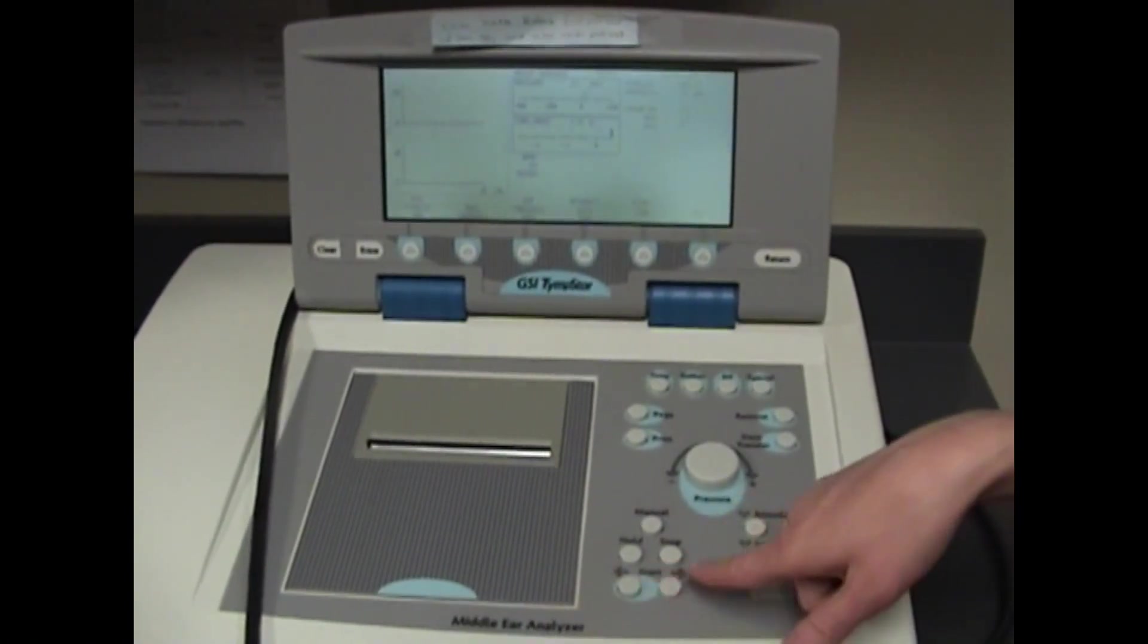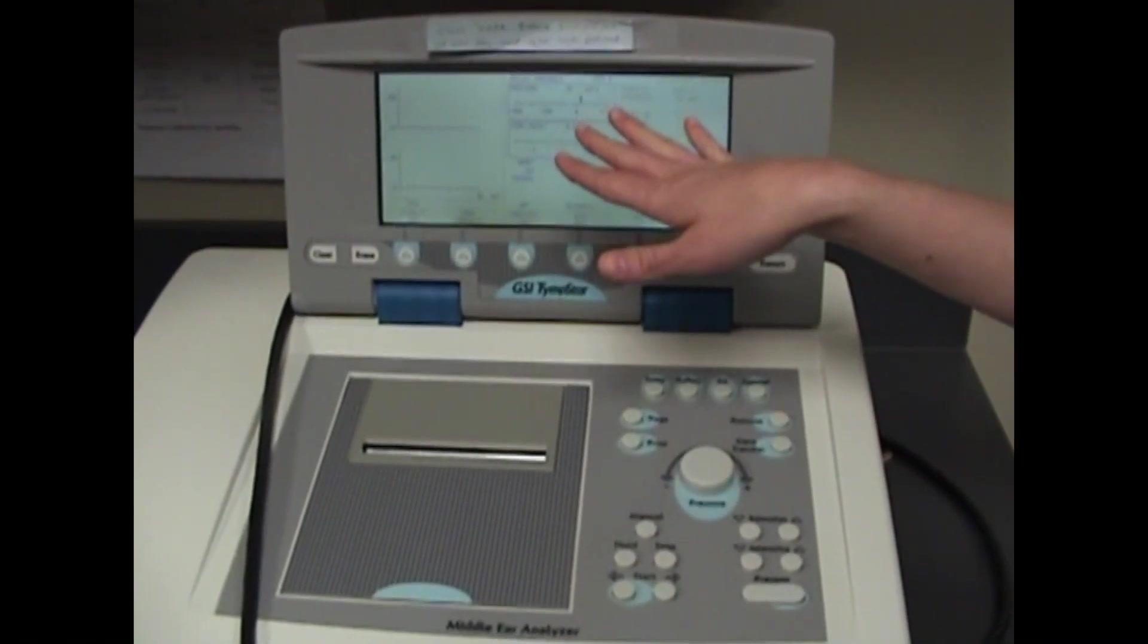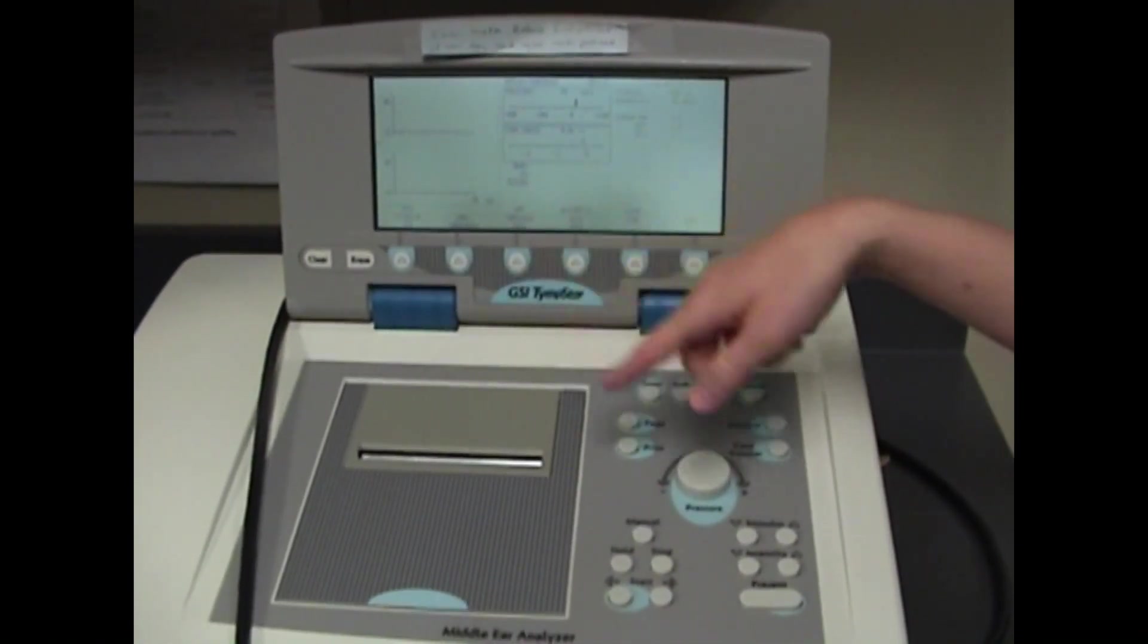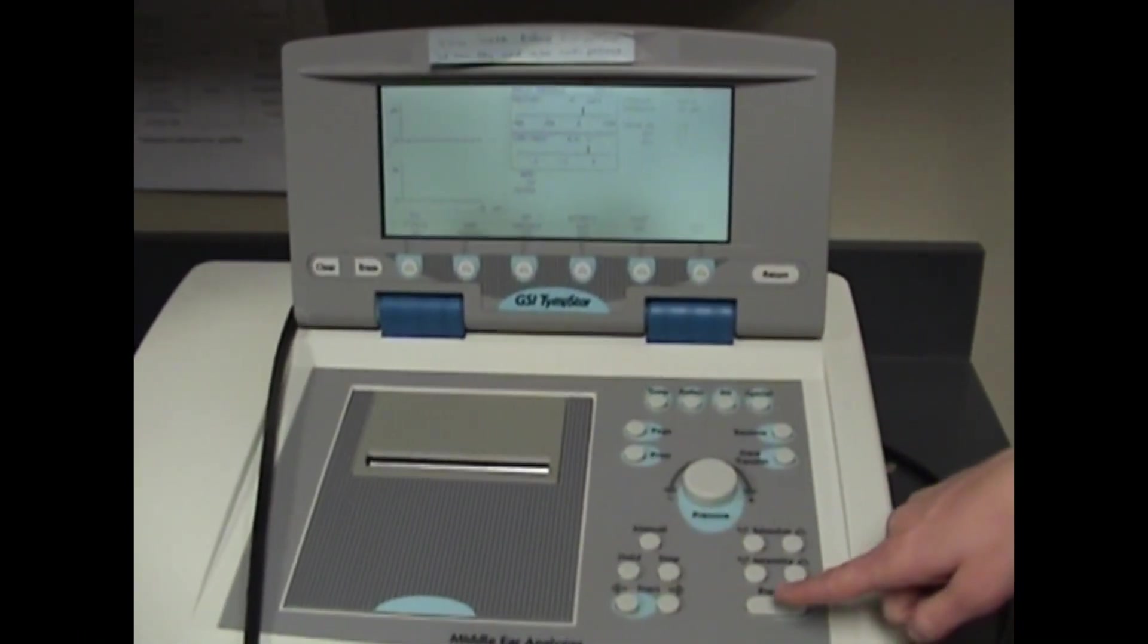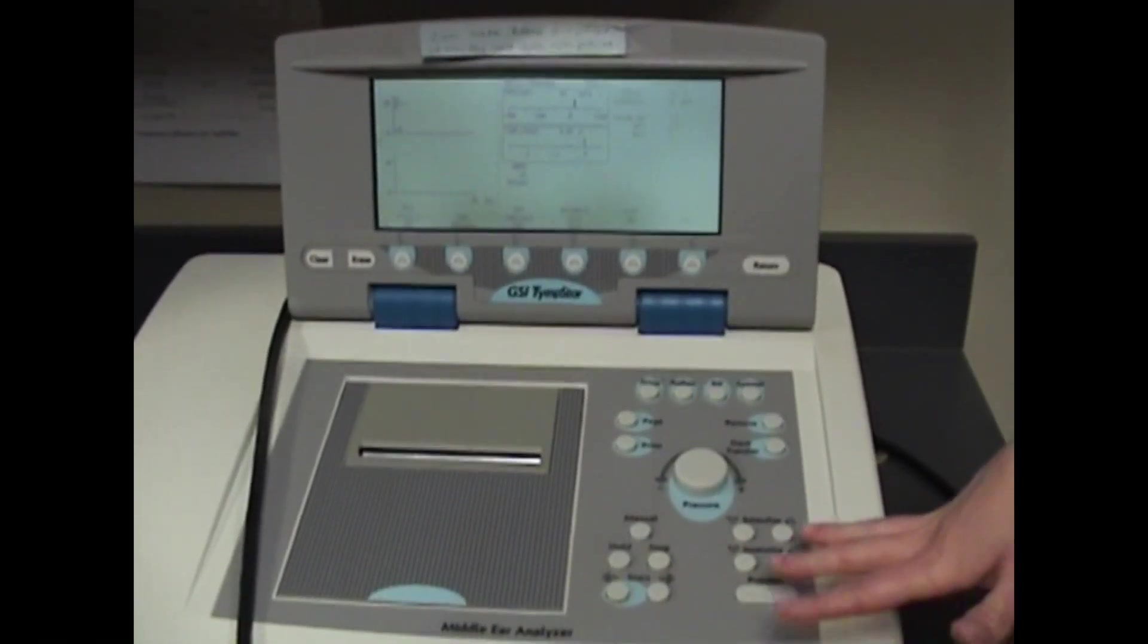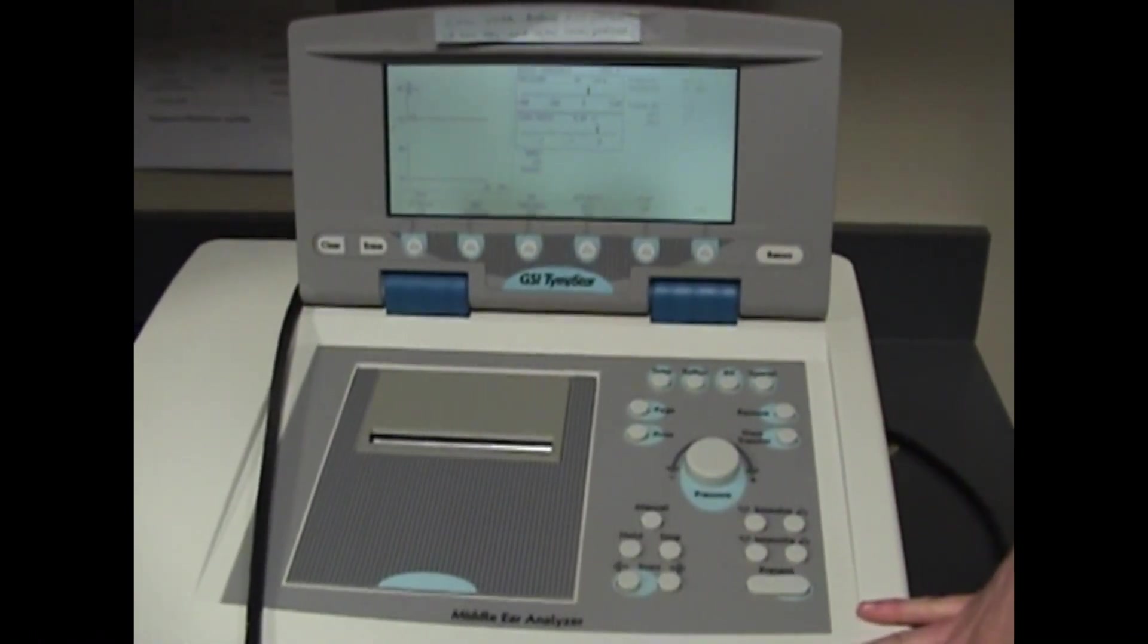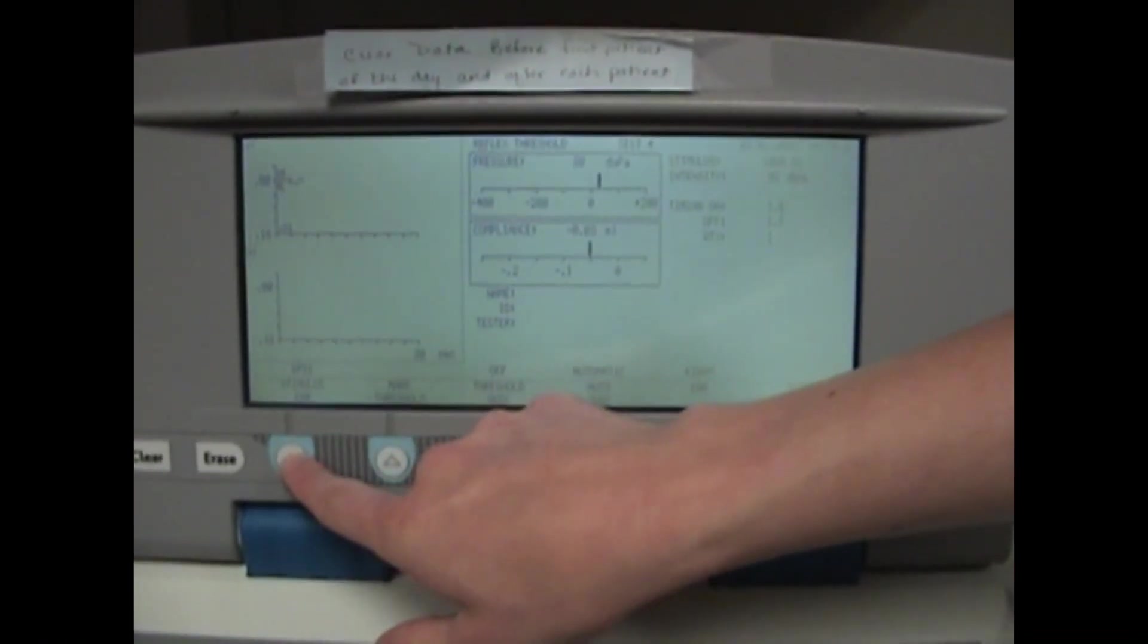Once everything is set up, press start to put the probe tone in the patient's ear. On the screen you'll see a portion that says compliance with a little piece that moves back and forth—you want to make sure that's stabilizing to zero before you get started. Next, present the tone at 85 dBHL. 1000 Hertz is the only frequency we use for ipsilateral reflex testing.